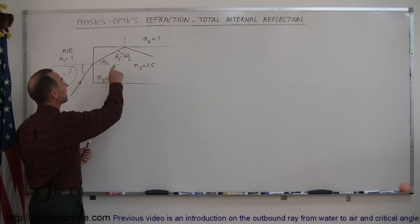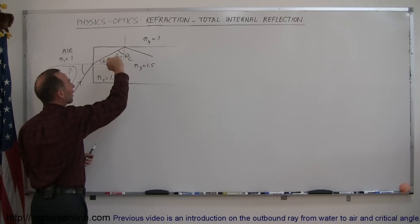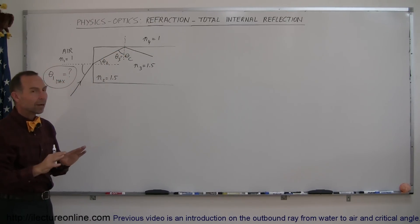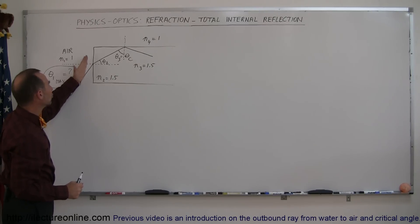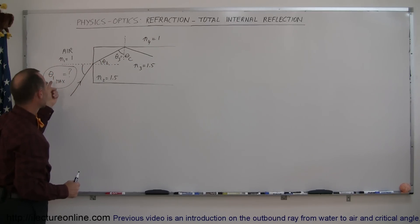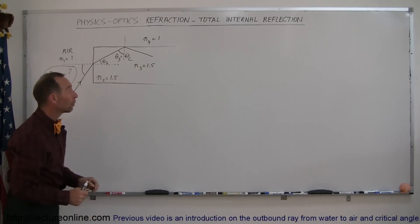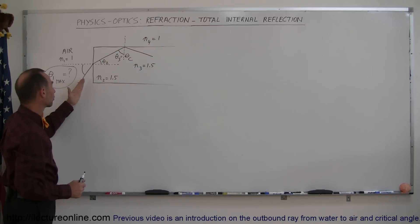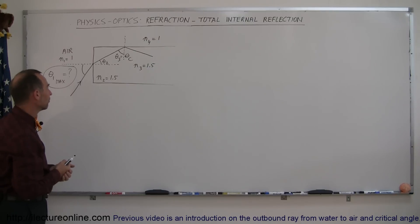We already know that the angle of incidence upon a boundary from inside the cable — where air is on the outside — must be at least the size of the critical angle. Here we're making the problem slightly more difficult. What if we shine a beam of light in at the very edge, perpendicular to the cable? What is the largest angle that this incoming beam can be so that the light, once it enters the fiber optic cable, will still be totally internally reflected and keep going? If you make this angle too large, the beam will actually leave the fiber optic cable, which would not be good.